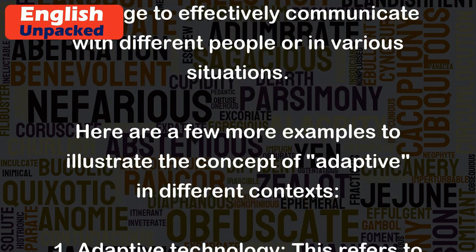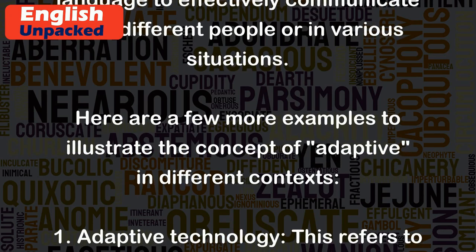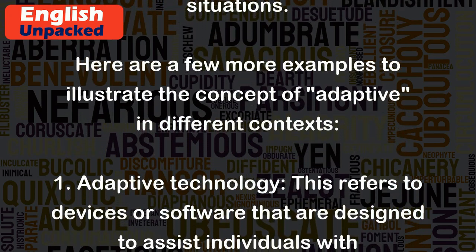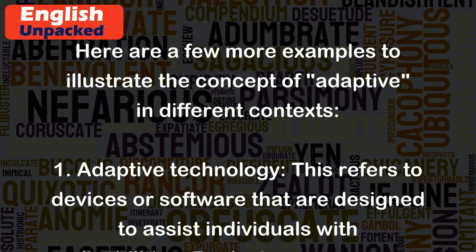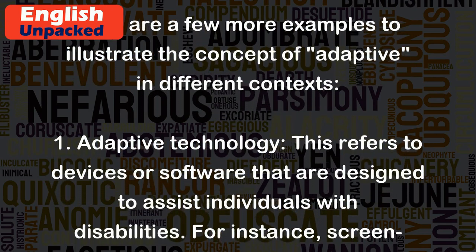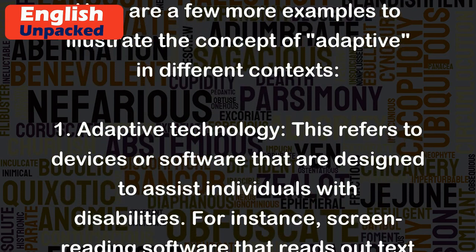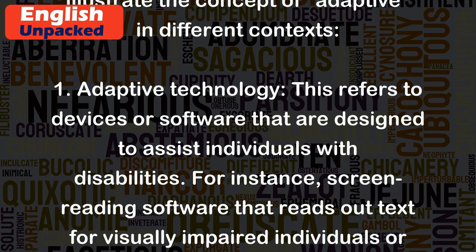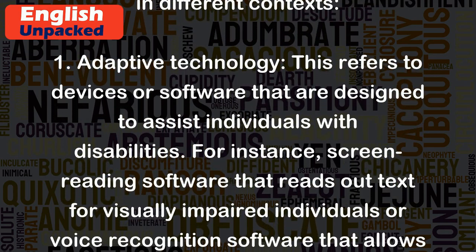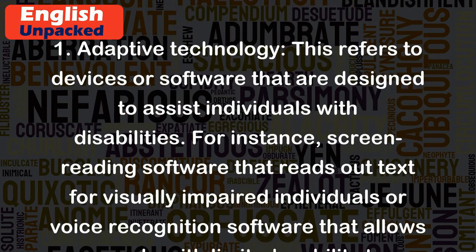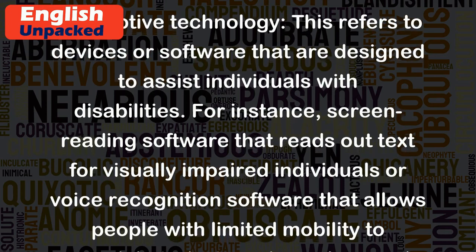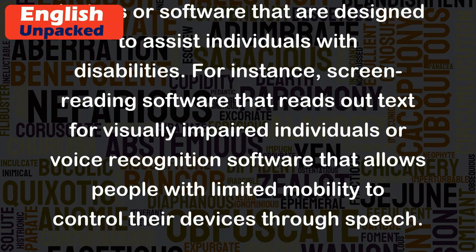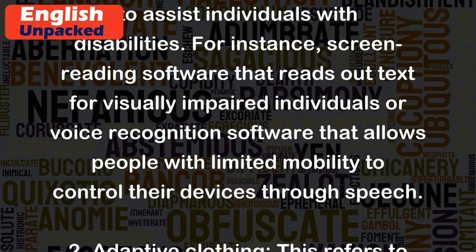1. Adaptive technology. This refers to devices or software that are designed to assist individuals with disabilities. For instance, screen reading software that reads out text for visually impaired individuals, or voice recognition software that allows people with limited mobility to control their devices through speech.